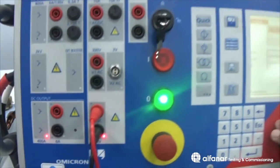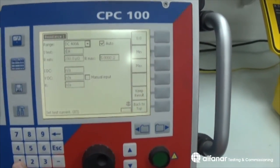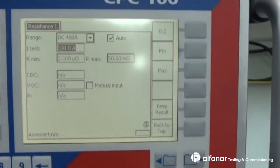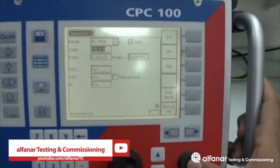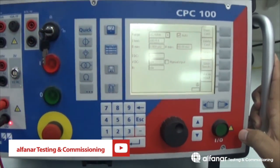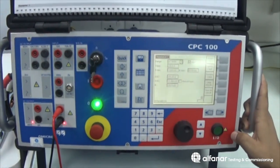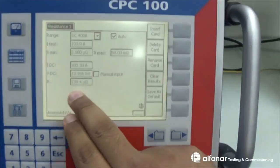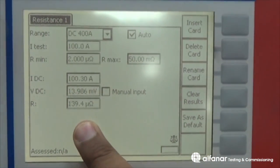Then, I will choose the current for the test to be 100A. Then, okay. I will press start. Here, the test result is 139.4 microohm.